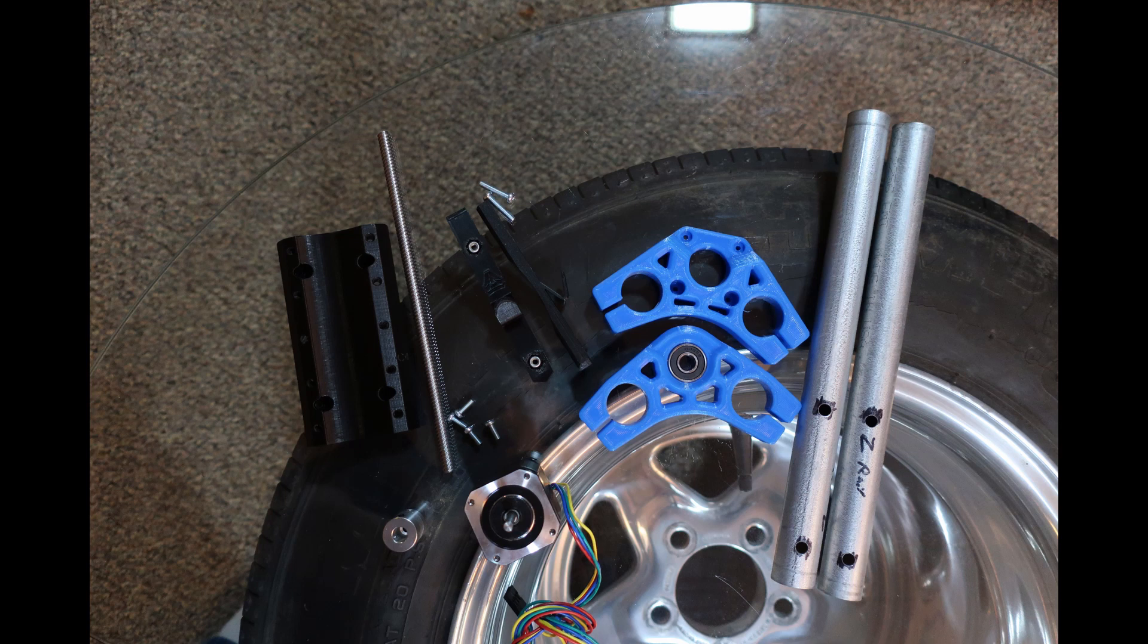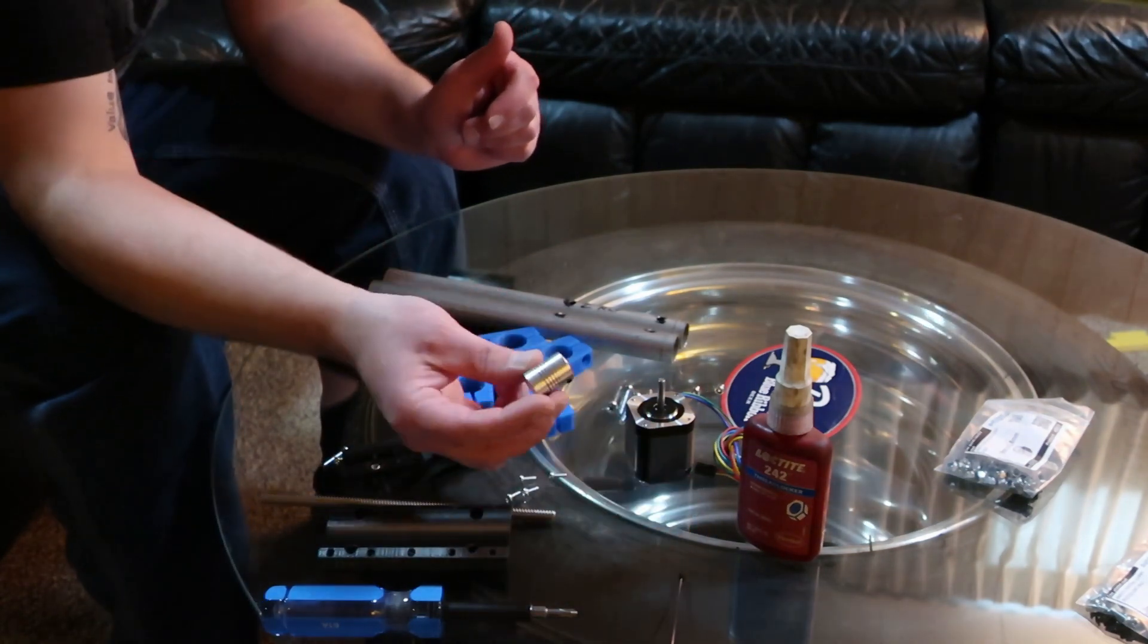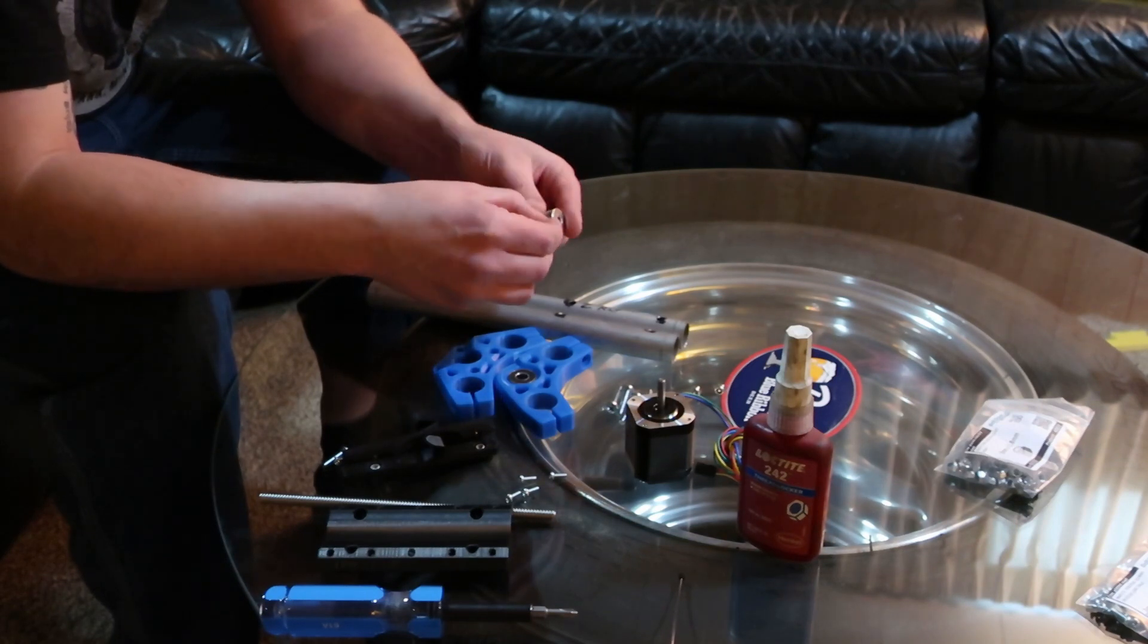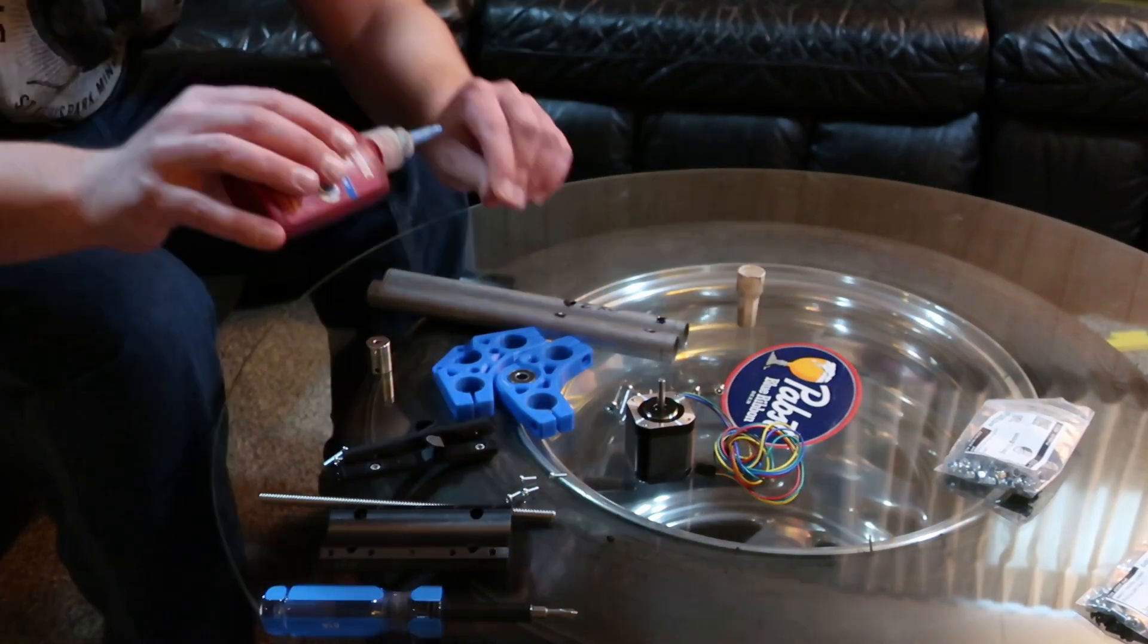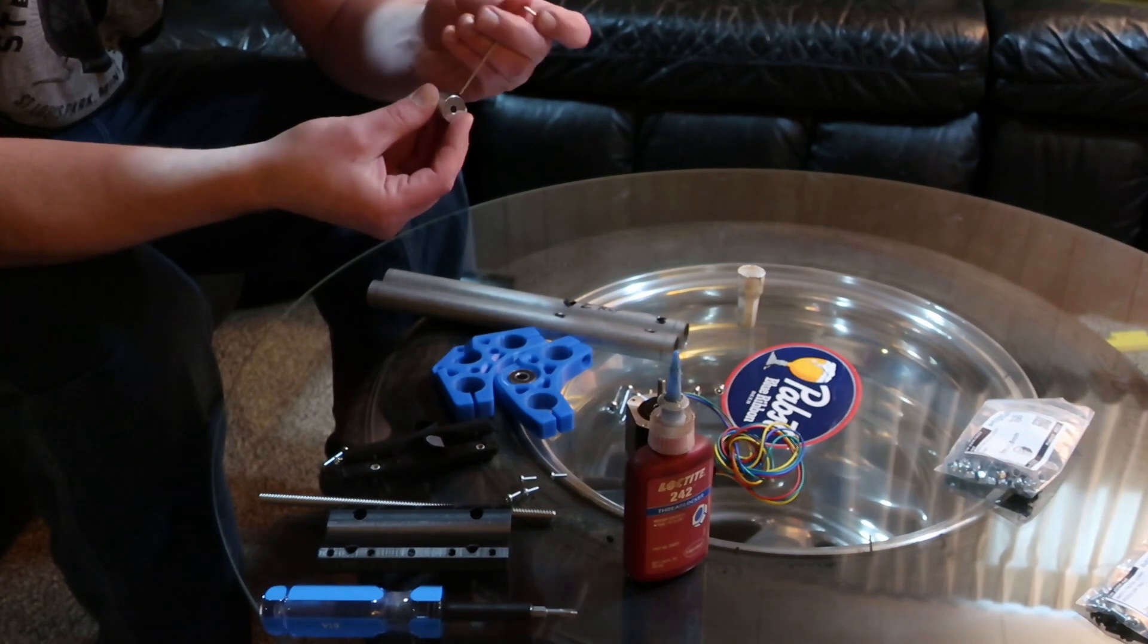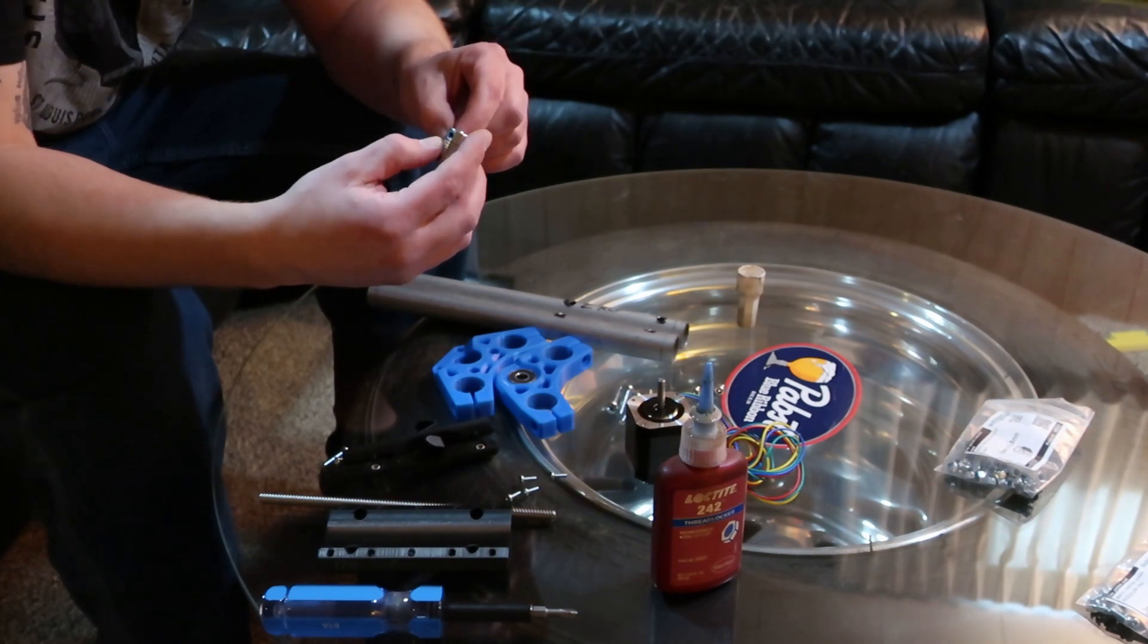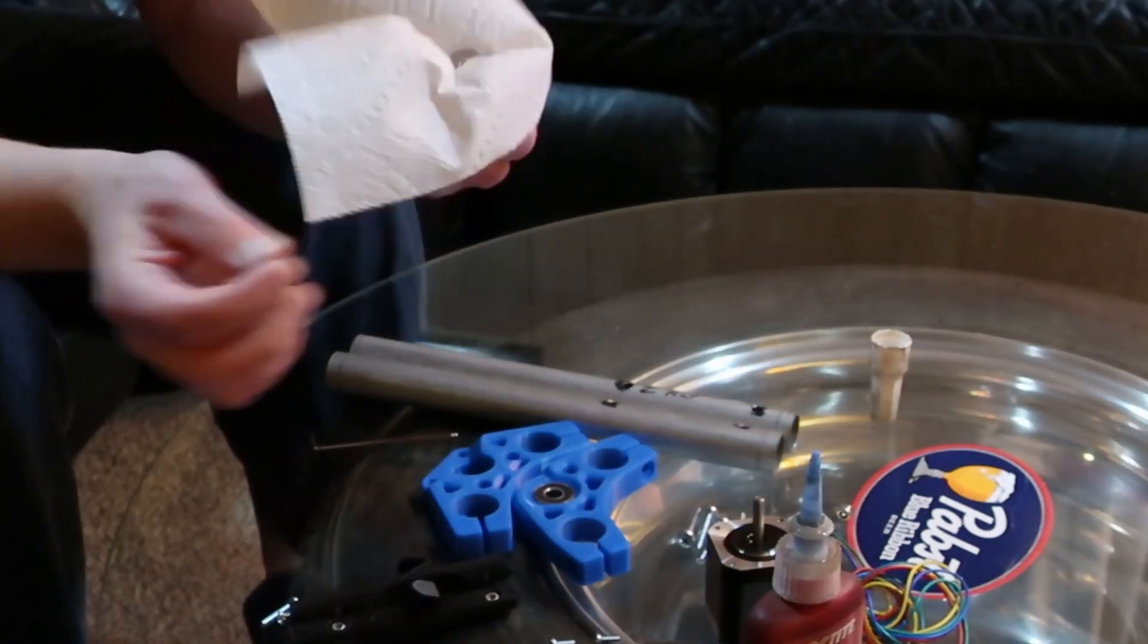First we're gonna assemble the z-axis stepper motor and lead screw and coupler. Just a little spring coupler here. I'm gonna put Loctite on the screws in it so they don't back out. There's four of them. Not a bad idea that paper towels are on.